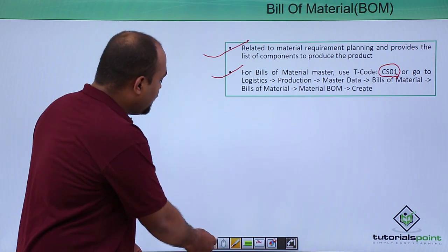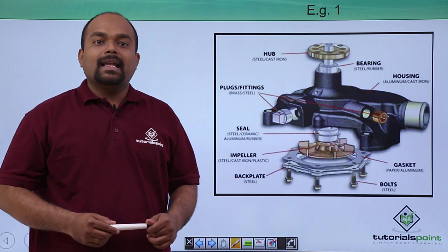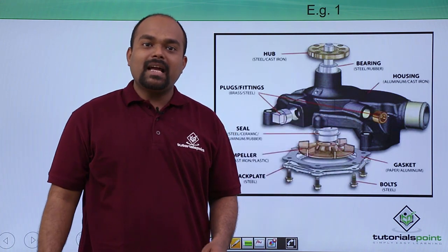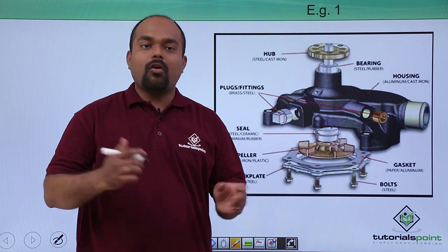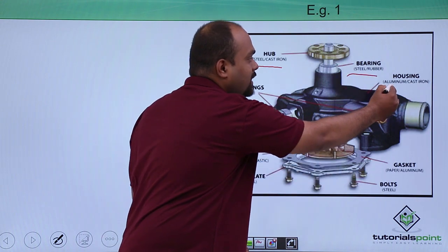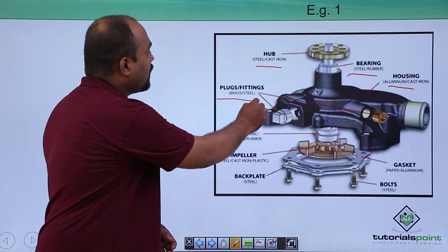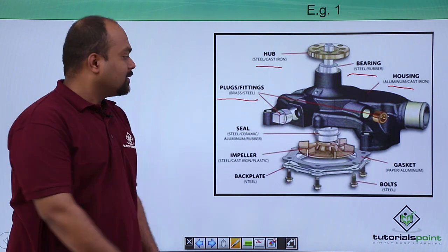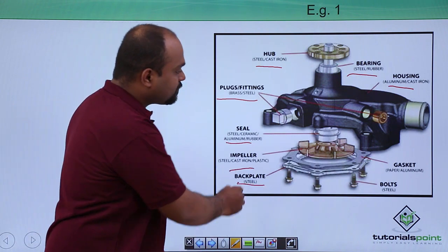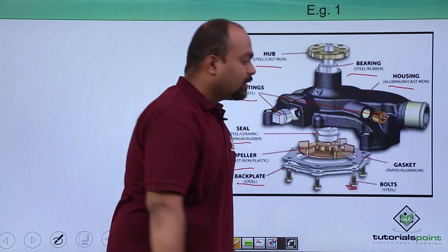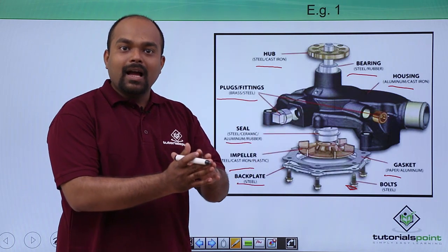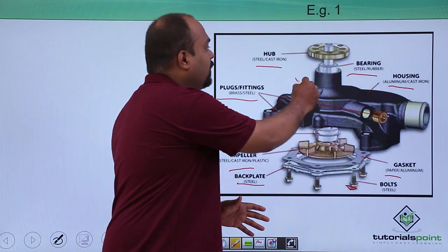Next, we will see some examples of bill of material. Example number one: there is one component having different subcomponents or raw materials like hub, bearing, housing, plugs or fittings, seal, impeller, back plate, bolts, and gasket. All these subcomponents are assembled and one component will be manufactured.